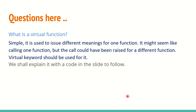In the base class the function prints 'I love India'; in the derived class it prints 'I love the world.' We need to call the derived class function appropriately, and for this we use the virtual keyword. Simply put, a virtual function gives different meanings to one function — the function name remains the same but the contents can differ.